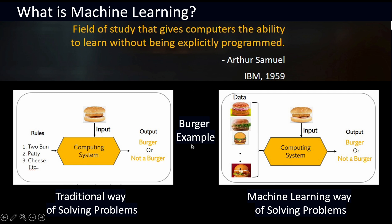Let us take a burger as an example to see how this is solved the ML way. In the traditional or rule-based approach, we define rules such as: a burger must have two buns, a patty in the middle, and cheese, etc. The computer then checks an image against these rules to decide whether it is a burger or not. This is the rule-based method of solving the problem.